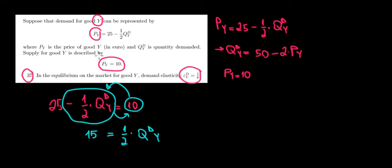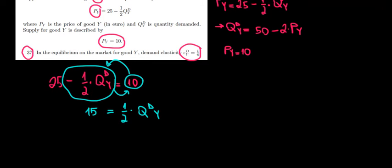What would be the quantity demanded of Y in equilibrium? The quantity demanded of Y would be equal to 30 units. So that would be 30 units. And we know that the price in equilibrium is 10 euros. Now what is the elasticity?